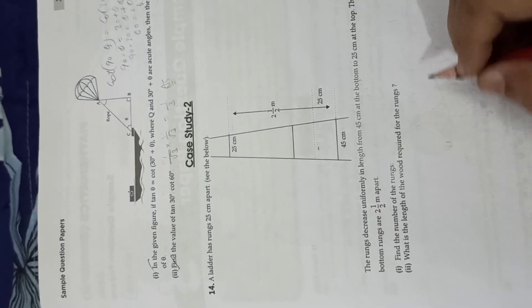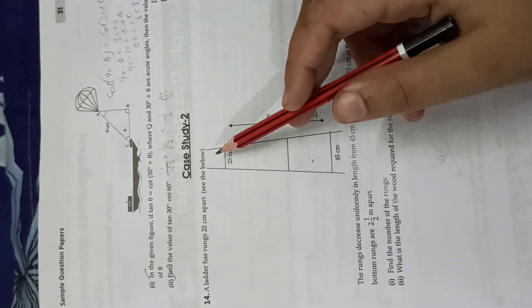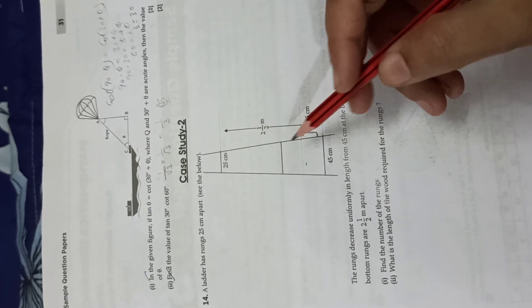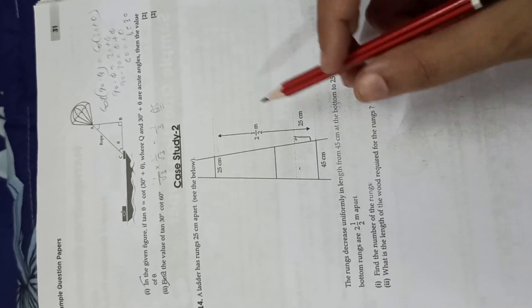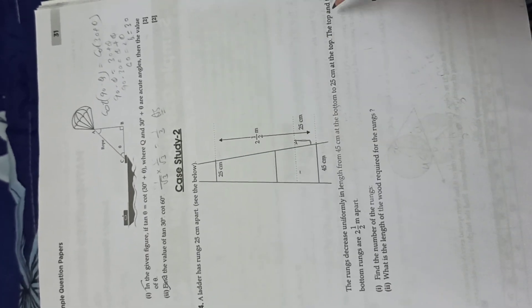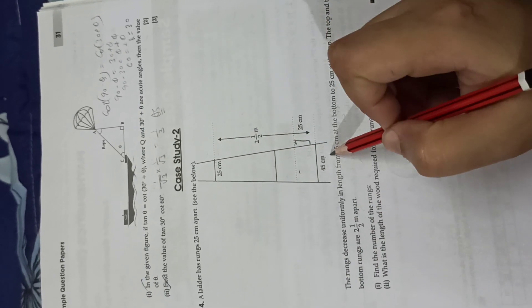The next question is the case study. Here we have a ladder. This shape of a ladder has rungs 25 cm tall. The rungs decrease uniformly in length. Bottom is 45cm and top is 25cm. Top and bottom rungs are 2.5m apart.